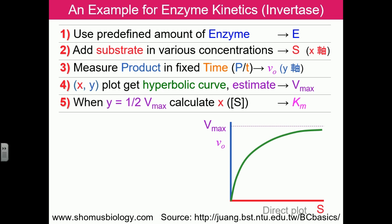If you identify the specific region where half the Vmax is achieved and extrapolate that line to the x-axis, you get a specific point of substrate concentration. That substrate concentration at which the enzyme-substrate reaction reaches half of its Vmax is known as Km. Km is like a half-life concept used in experimental assumptions.